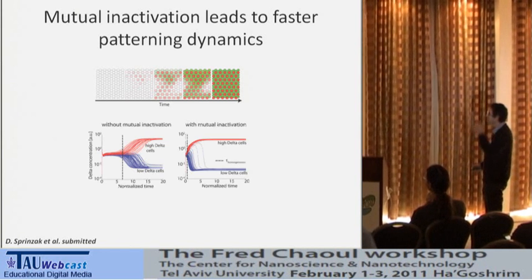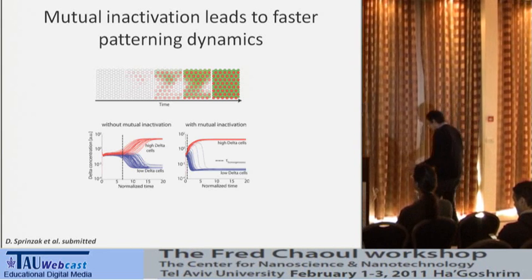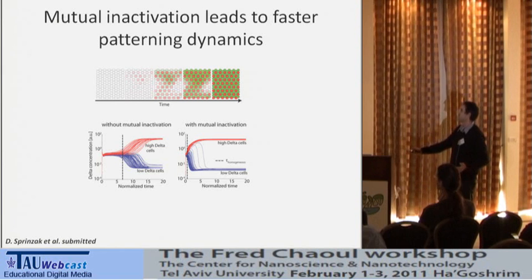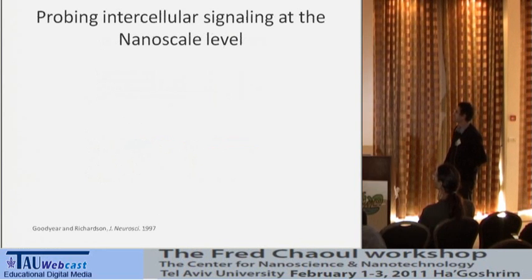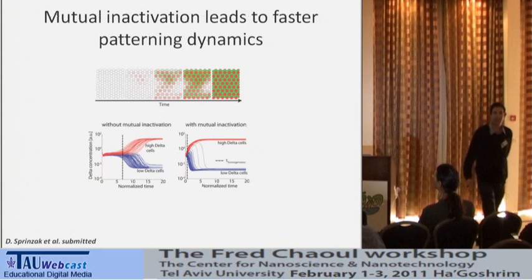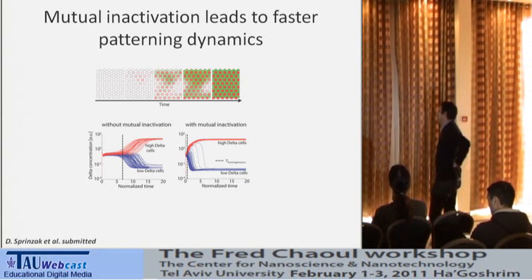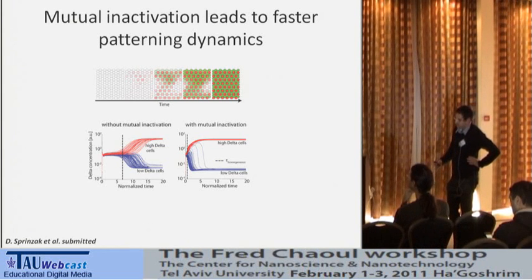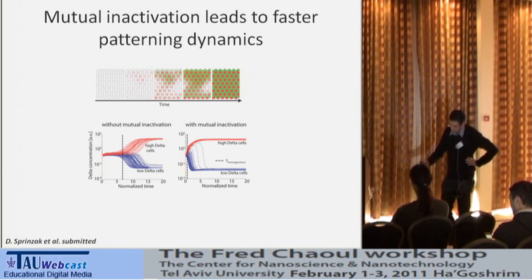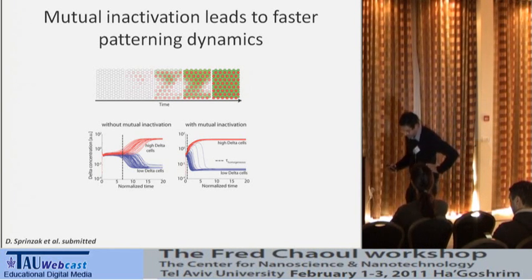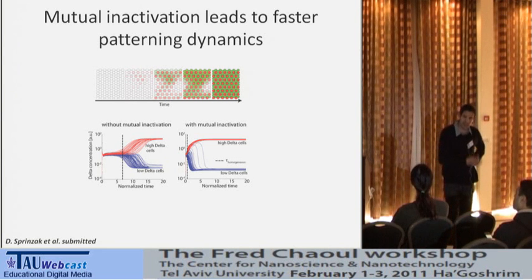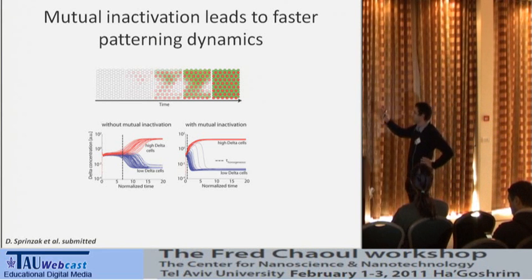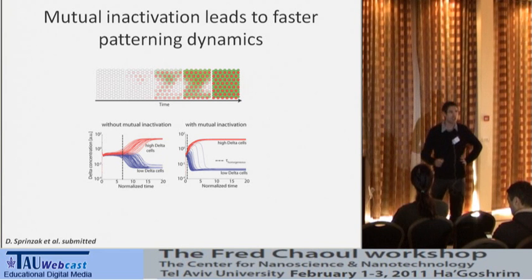We can also look at the dynamics of patterning — how fast patterns are formed — and show that with mutual inactivation you get much faster patterning. To summarize: with the mutual inactivation mechanism, it's much easier to get patterning than without it, and this is true both for checkerboard-like patterns and for the generation of sharp boundaries.